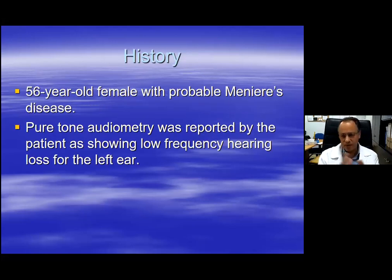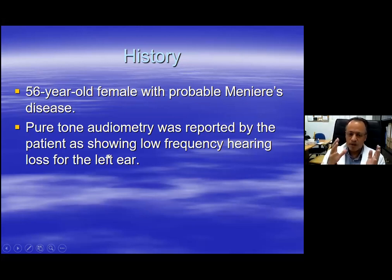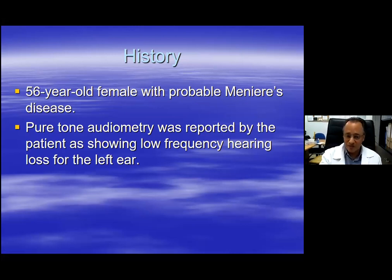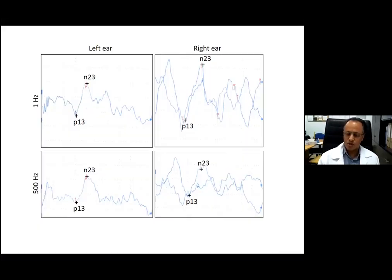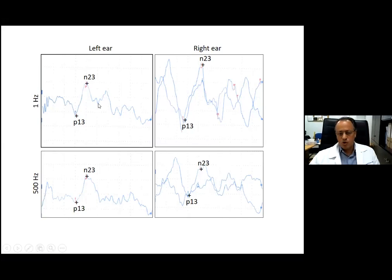I show a similar case, but this is interesting as well. This was a 56-year-old female with probable Meniere's disease — and she does have Meniere's disease. The pure tone audiometry was reported by the patient; I didn't have the audiogram with me, but she reported that there was low frequency loss in the left ear. I did the C-VEMP, expecting to see frequency tuning for the left ear on the same side as the pure tone audiometry, but to my surprise I saw this frequency tuning not on the left but on the right.